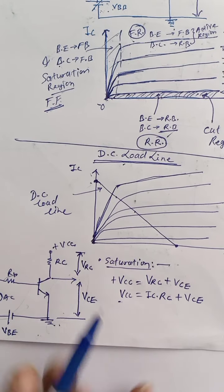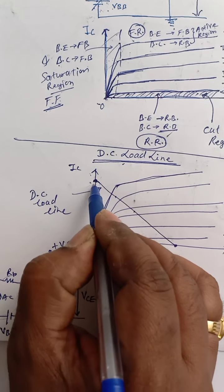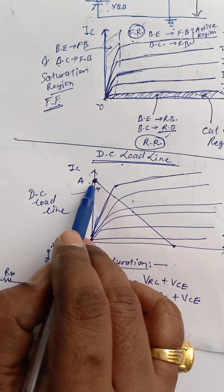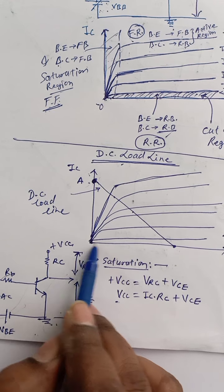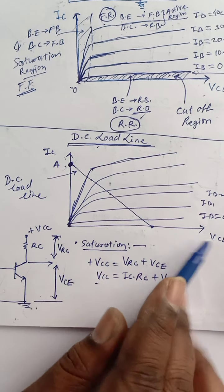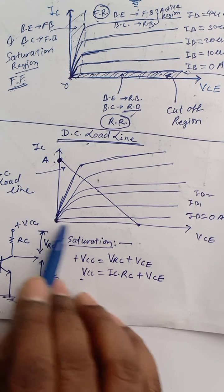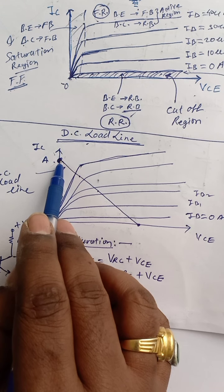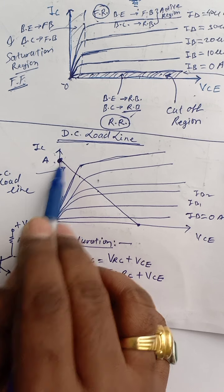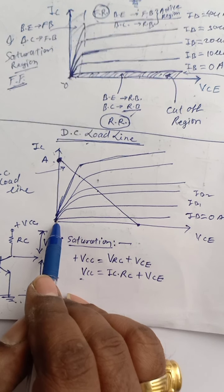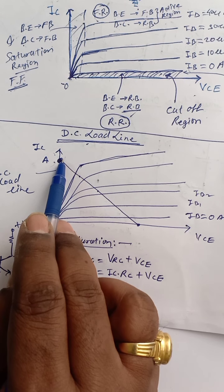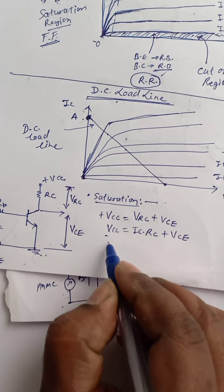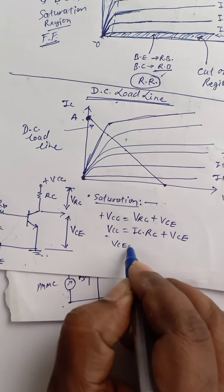From the graph we can easily observe that when the transistor is operated at the saturation point, collector current IC is maximum and VCE is zero. So at VCE equal to zero you get IC maximum. When transistor operates in saturation, VCE equals zero.